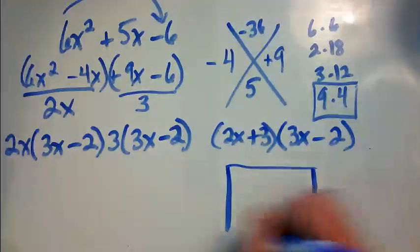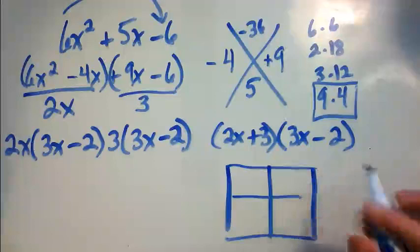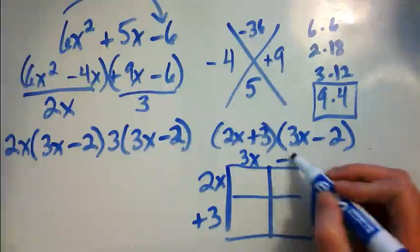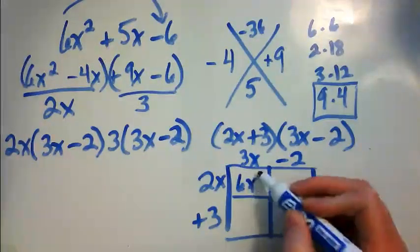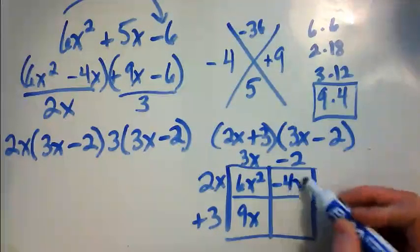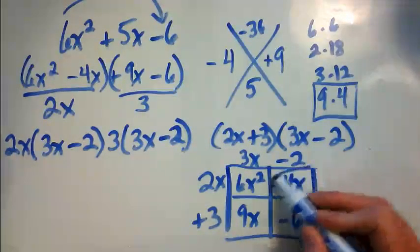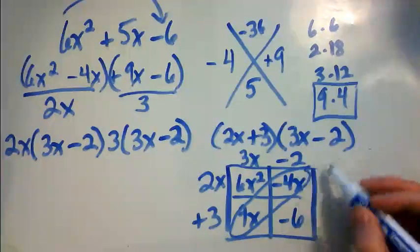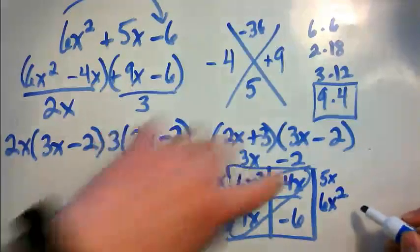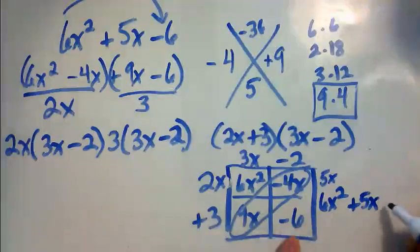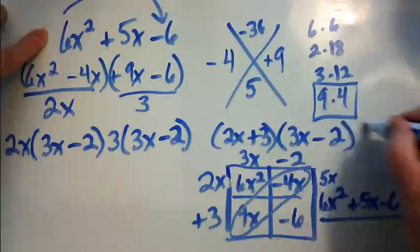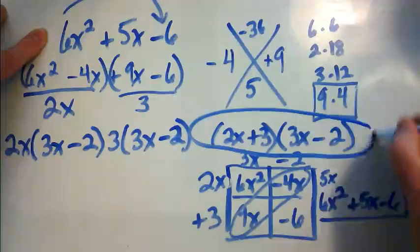I'm going to check my work. 2X plus 3, 3X minus 2. I'm going to multiply. Combine my like terms, and I get 6X squared plus 5X minus 6. This is the same as this, which means this is the answer.